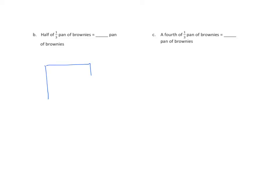We'll take our rectangular model and partition it into three equal parts. Remember to label one whole. We're going to shade one-third, then bracket that and label it one-third. We want one-half of one-third pan of brownies, so I will partition my area model into two equal parts going horizontally.